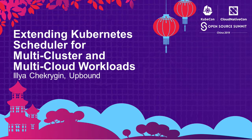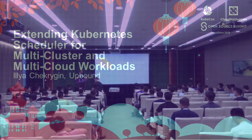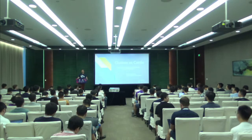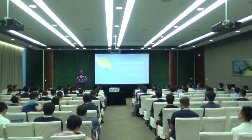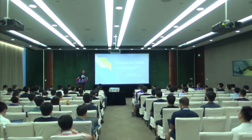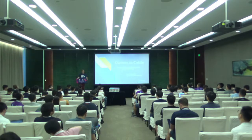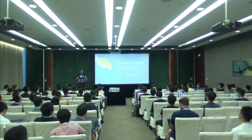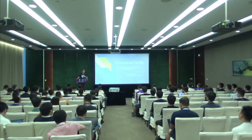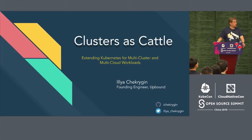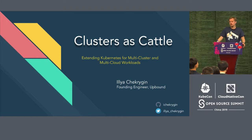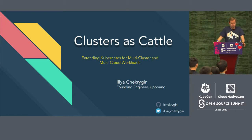Good afternoon, everybody. My name is Ilya Jakrigin. I'm founding engineer at Upbound and also lead maintainer on the Crossplane project. It's an open source project we started at Upbound about eight months ago, and we open-sourced it right before KubeCon in Seattle last December. Today I want to talk to you about extending Kubernetes to orchestrate and support resources managed by public cloud providers.